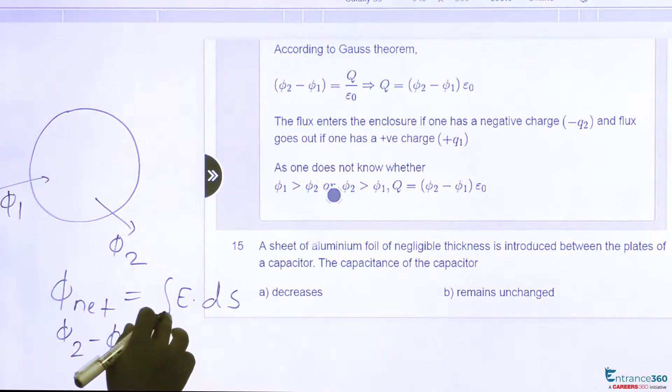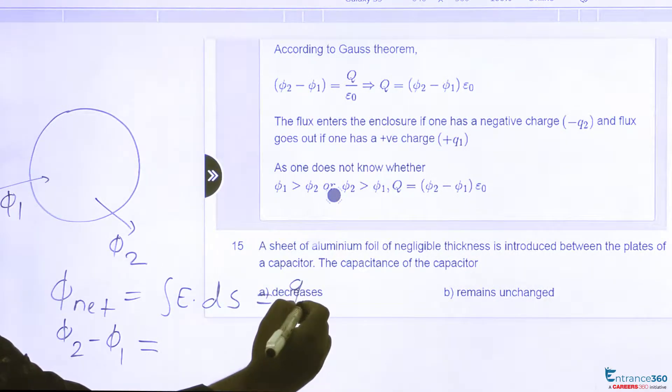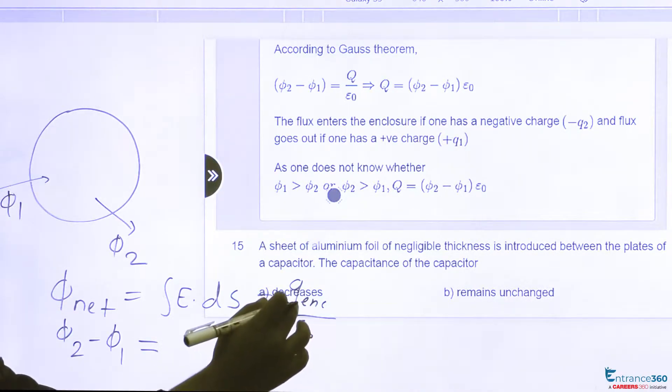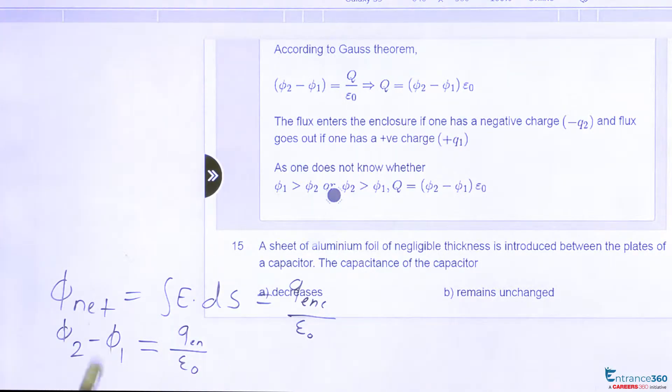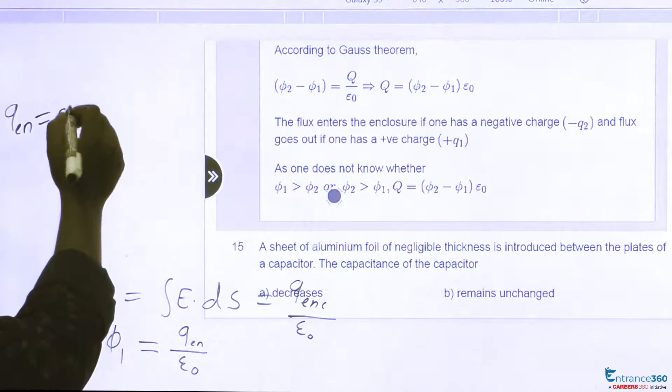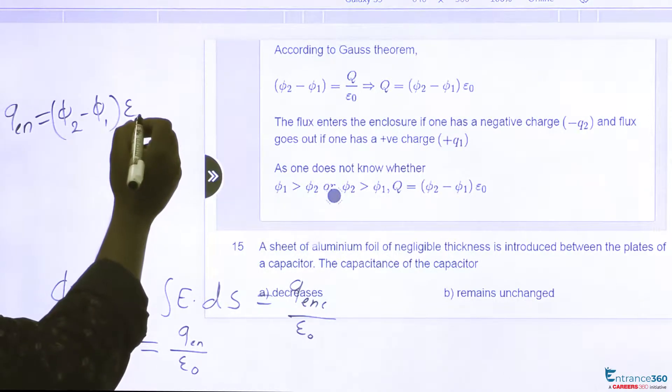Gauss law also says that E dot ds is equal to q enclosed upon epsilon. So we put this here. From these two equations we can find out q enclosed in terms of phi1 and phi2, which is q enclosed equals phi2 minus phi1 times epsilon.